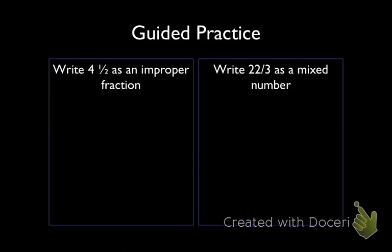Now it's your turn. We have two problems. The first one is to write 4 and 1 half as an improper fraction, and the second is to write 22 thirds as a mixed number. At this point, feel free to pause the video, solve these two problems on your own, and then restart the video to check your answer.